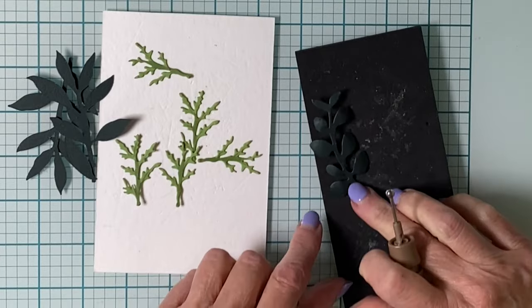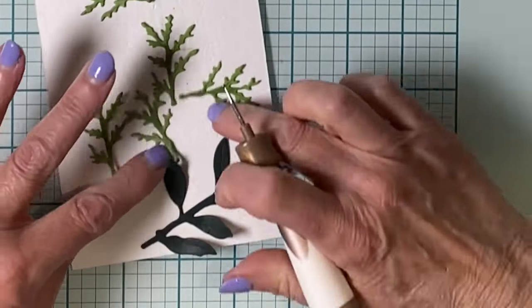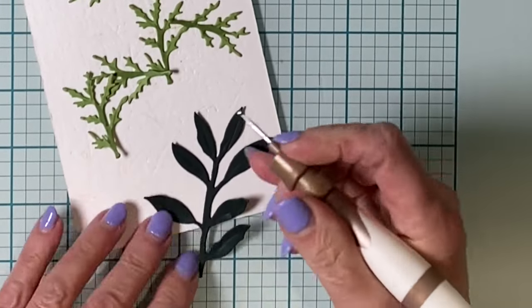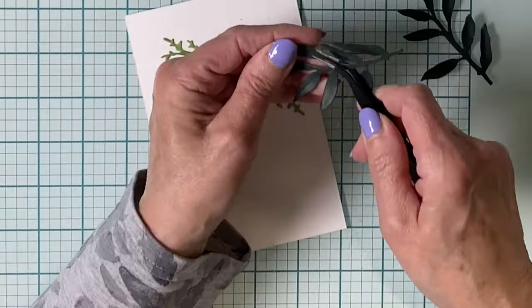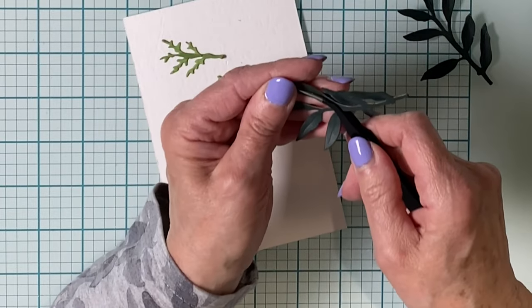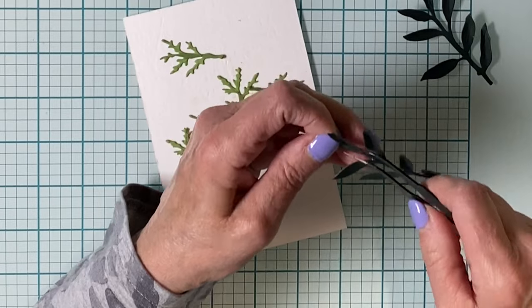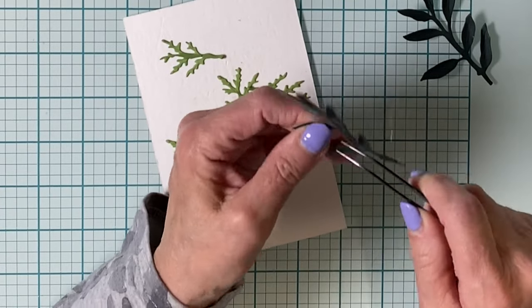For the other two leafy branches, which are the same, I'll take that smallest ball tool and just draw a vein in the center. Then take my fine detail tweezers, place them at the base of each of the leaves, and then squeeze upwards.